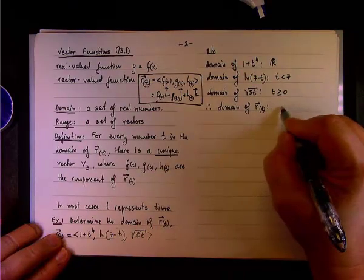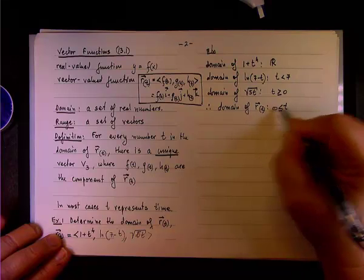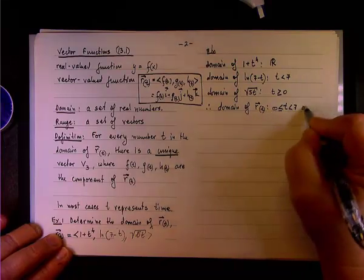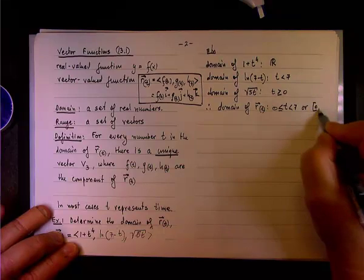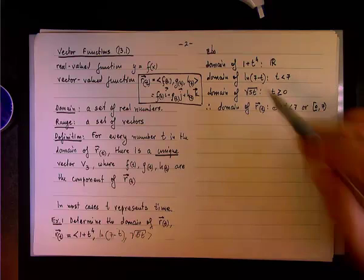0 to 7 is correct, but what about the 0? Are we going to include it? Right. Or we can write it as open 0 to 7.